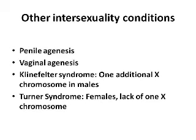Intersexuality is not just one condition — it's a series of conditions resulting either from chromosomal abnormalities or from problems in hormonal development, especially during the prenatal sexual development phase. Another chromosomal abnormality that results in an intersexual condition is Turner syndrome, which is for girls. These are girls born with only one X chromosome, giving them 45 chromosomes total.